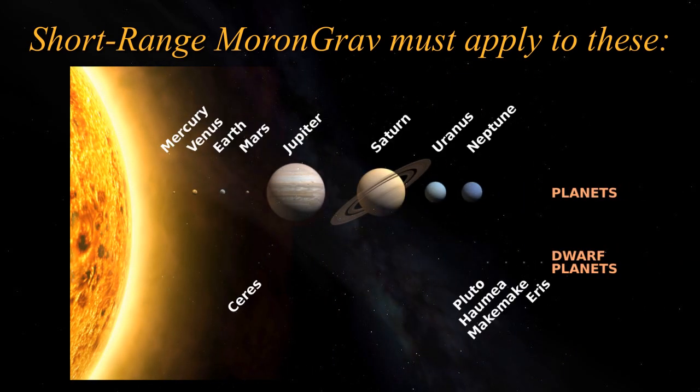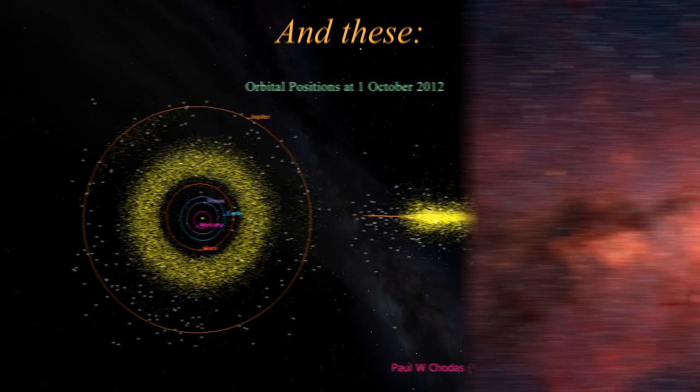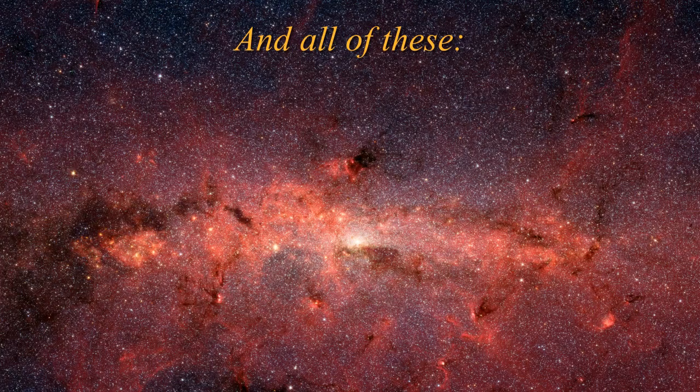If gravity has a much shorter range for the Earth, it must do so for all other objects too. This leaves a question as to why periodic comets exist.